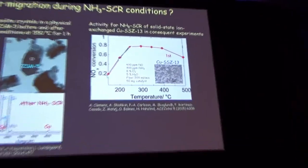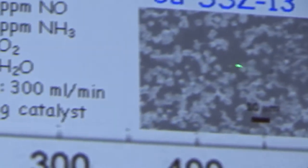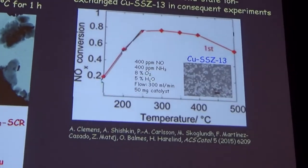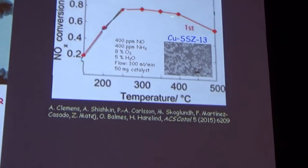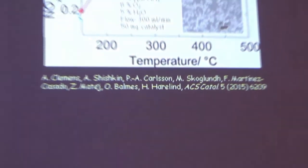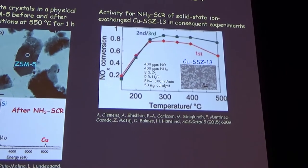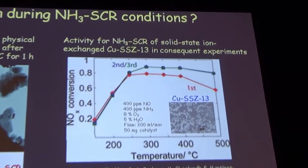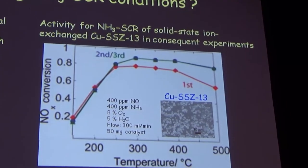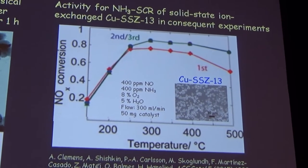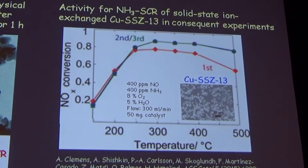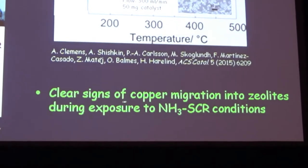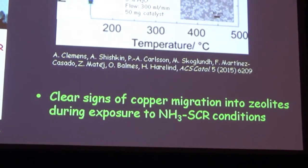Another example is copper SSZ-13, prepared by solid-state ion exchange at high temperature, then treated in consecutive experiments under ammonia SCR conditions—NO, ammonia, oxygen, water. In the first run there is a conversion maximum in a certain temperature interval. In the second and third runs there is higher activity, so something has happened with this zeolite despite being treated at 700 degrees during preparation. We have clear signs that copper migrates into the zeolite when exposed to SCR conditions.